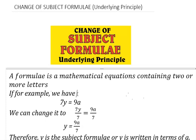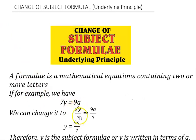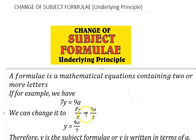Looking at what we have on screen: if we have 7y equals 9a and we want to make y the subject of the formula, we divide both sides by 7 because it is multiplication between them. The 7 cancels out, so our y is standing alone, giving us y equals 9a over 7. In the same vein, if we want to make a the subject of the formula, we divide both sides by 9 — that 9 cancels out — and we get a equals 7y over 9.